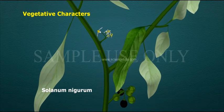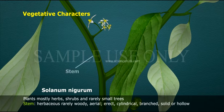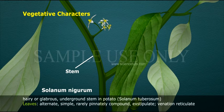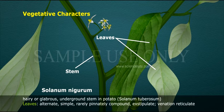Vegetative characters: Plants mostly herbs, shrubs, and rarely small trees. Stem herbaceous, rarely woody, aerial, erect, cylindrical, branched, solid or hollow, hairy or glabrous. Underground stem in potato (Solanum tuberosum). Leaves alternate, simple, rarely pinnately compound, exstipulate, venation reticulate.